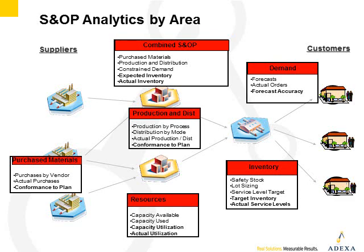At the bottom on the right, you see inventory planning analytics. There you'll be dealing with measures around setting safety stock, looking at lot sizing and the impact that has on your supply chain, what your expected service level targets are going to be, what your target inventory is supposed to be, and your actual service levels over time. These help you determine whether or not you're hitting your target inventory levels and service level targets.